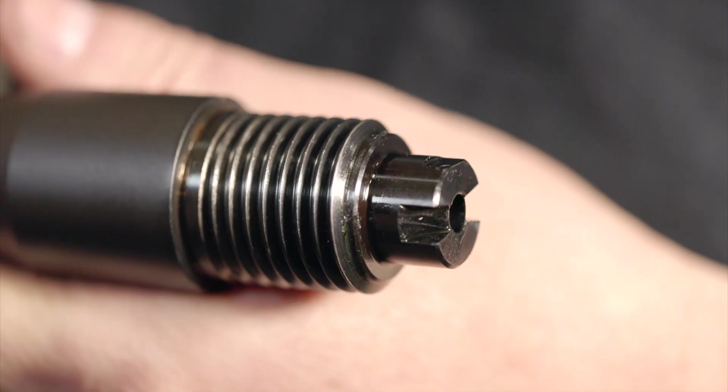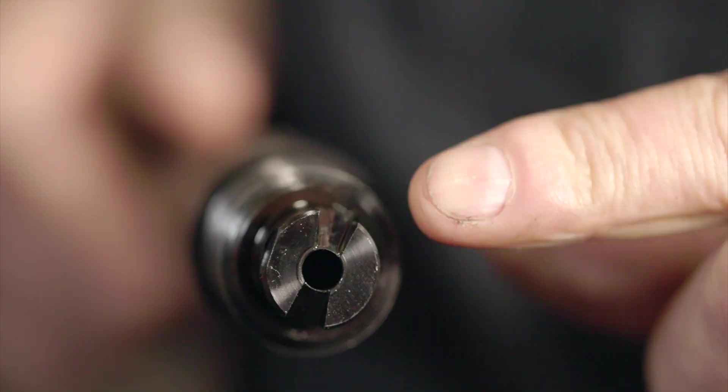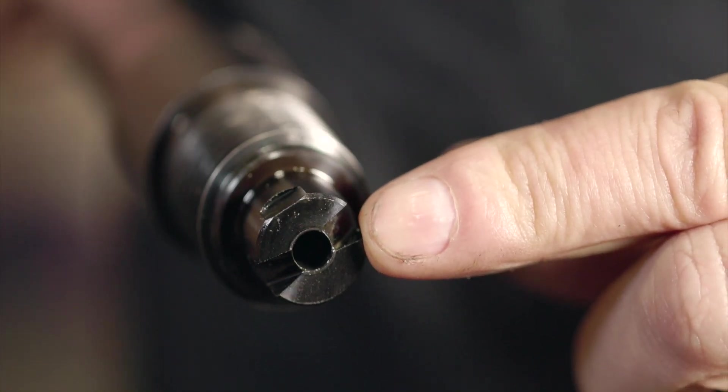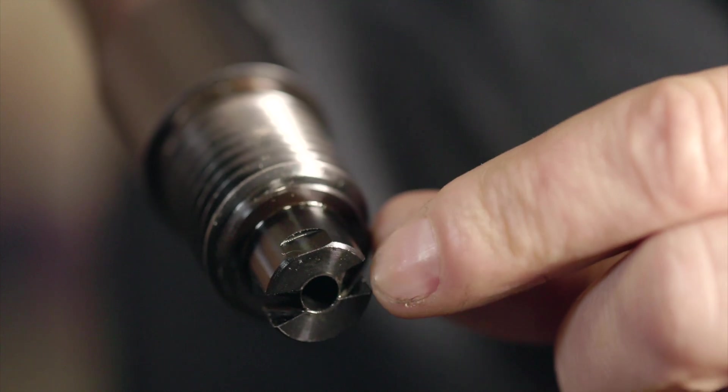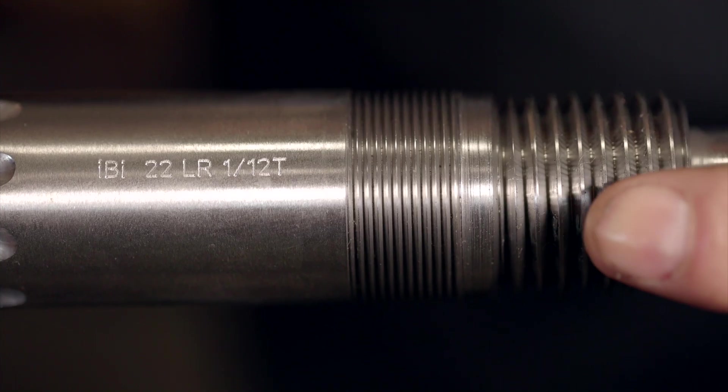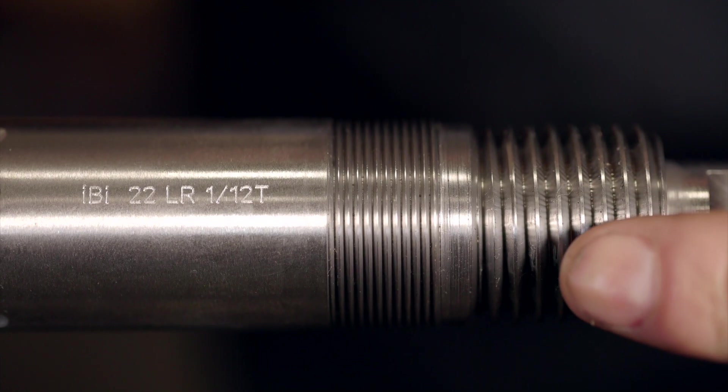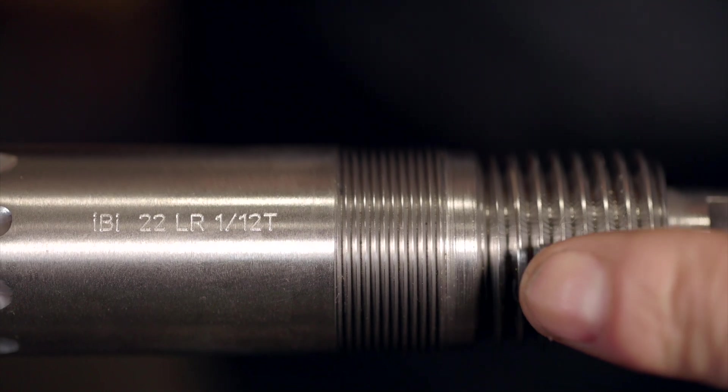The tenon threads are huge as you can see, and the extractor slots are regular size. On the top of the action you have a little notch, and that's so they can index the barrels in there with the extractor slots. With ours we're going to run two thread pitches: the tenon threads and the thread pitch for the barrel nut on top.